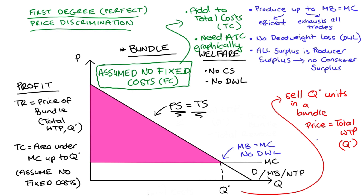Check the playlist and I'll put links to these additional problems in the description below. That covers our ways of first degree price discrimination: price equals willingness to pay, two-part tariff, or sell as a bundle. These are all different ways to get to the same outcomes — no consumer surplus, all surplus goes to the producer, and no deadweight loss. I hope the video helped — if it did, please like and subscribe. Hope you guys are keeping happy and safe.